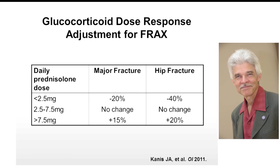Examples of enhancements to the original FRAX system include stratification by corticosteroid dose. The original calculator uses corticosteroid use as a simple yes/no, but there's a dose-response effect with higher doses giving higher risk and lower doses giving lower risk. John Kanis showed that you could modify the FRAX output after calculation: if you were a low-dose user, reduce the FRAX-calculated risk by 20%; for high-dose users, increase it by about 15% for major fractures, with a similar adjustment applied for hip fractures.